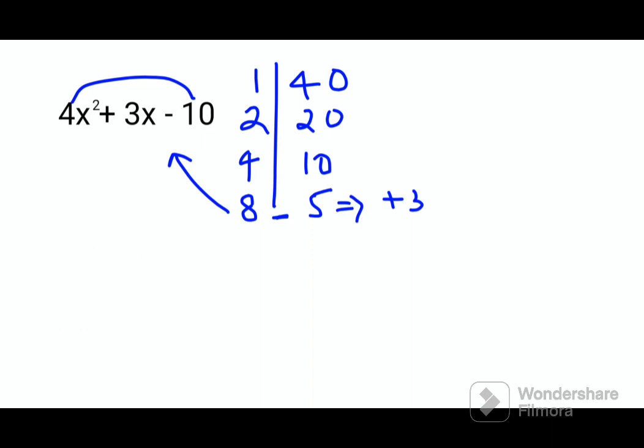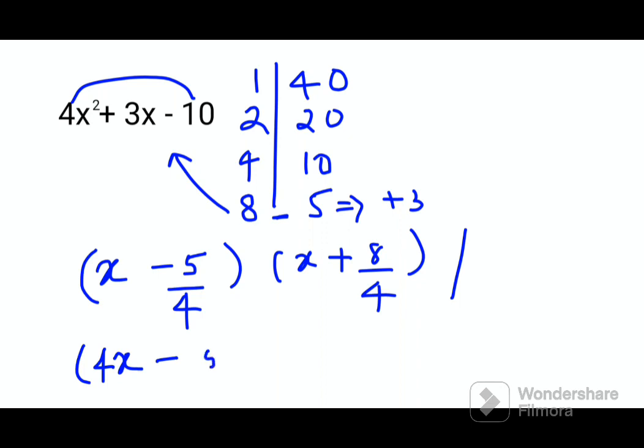Now again we see that 8 and 5, when you subtract 8 - 5 you get the answer as +3. So here again we have x - 5 and x + 8 upon 4. So this is your answer, or you can go one step ahead and you can get 4x - 5 and 4x + 8.